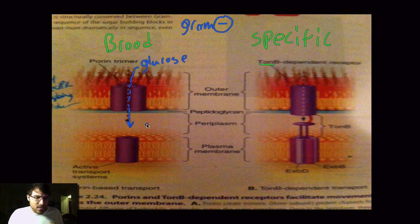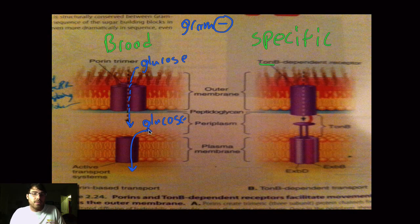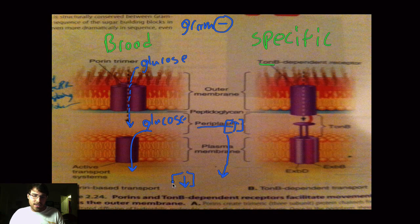Once a molecule is in the periplasmic space, it may float around and then go in through an active transport system. This could be a specific system for glucose or a symport system for glucose. The advantage of having this periplasmic space is that it's really easy to get a high concentration gradient because it's such a small space, so it's easy to get stuff to the inside of the cell where there's a lower concentration, passively without having to use ATP.